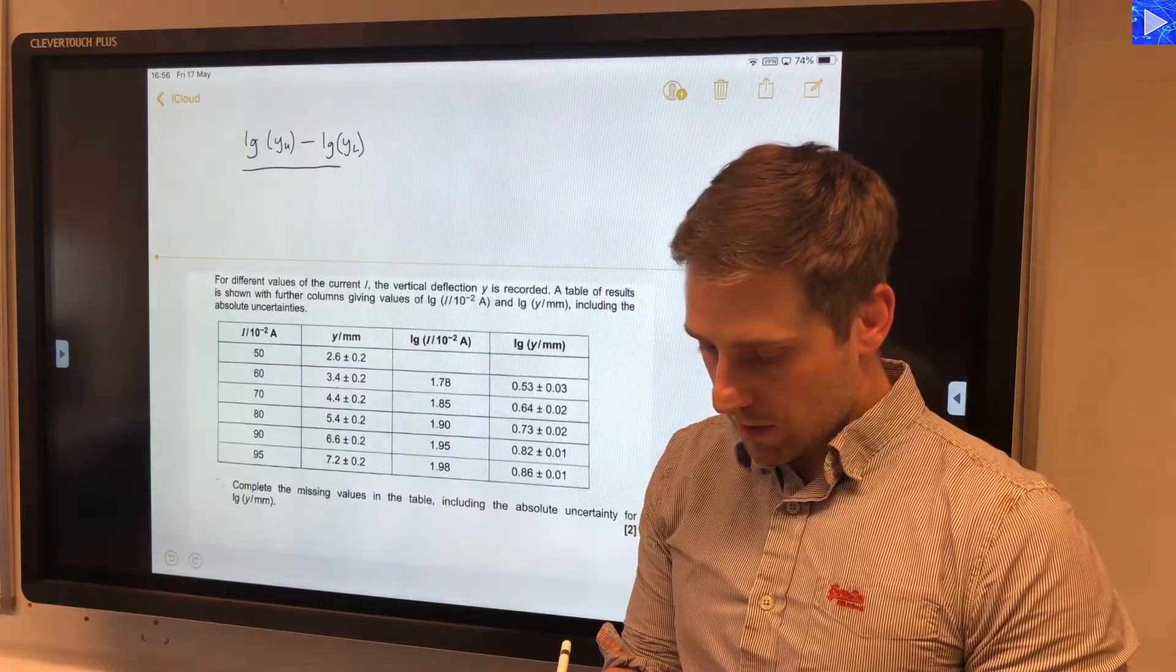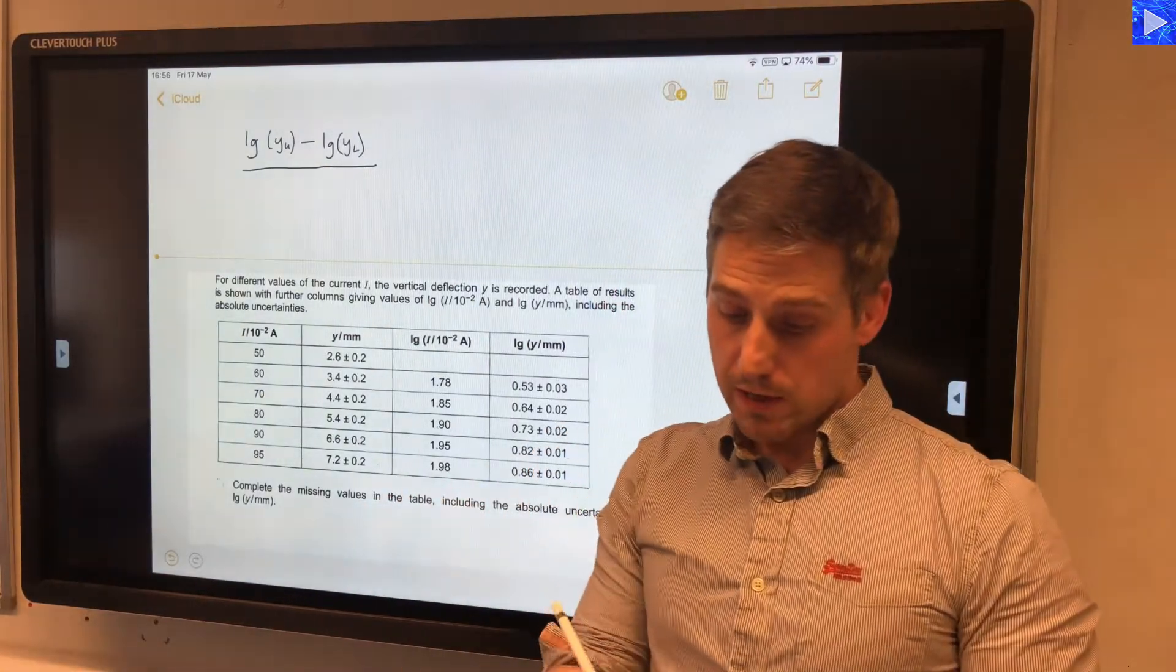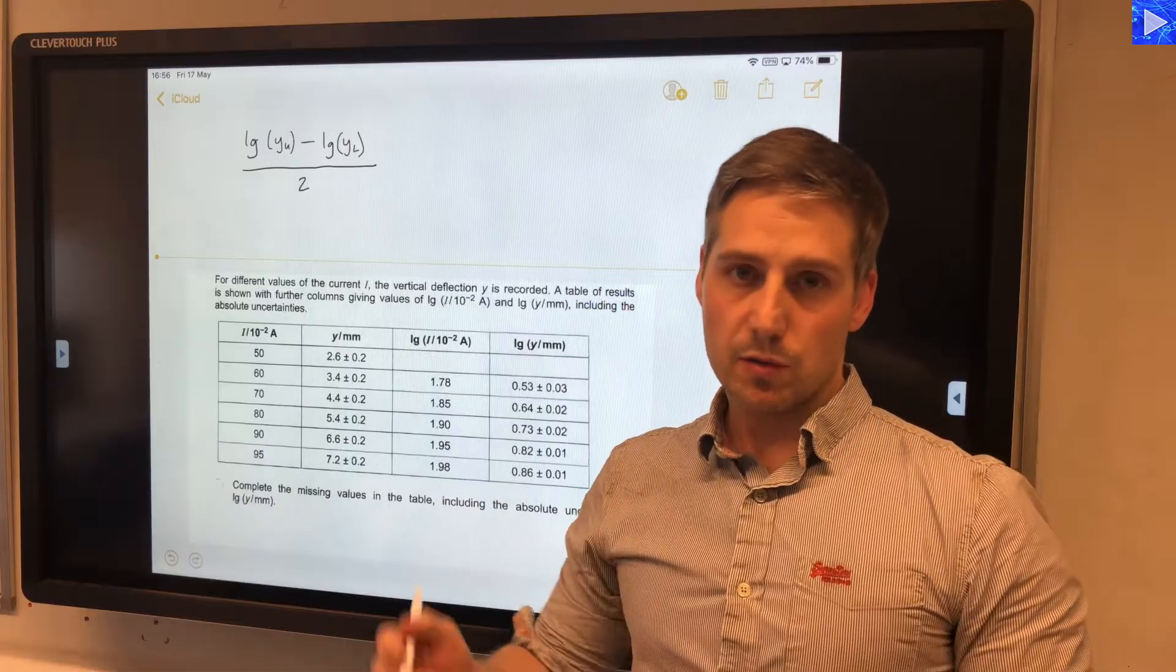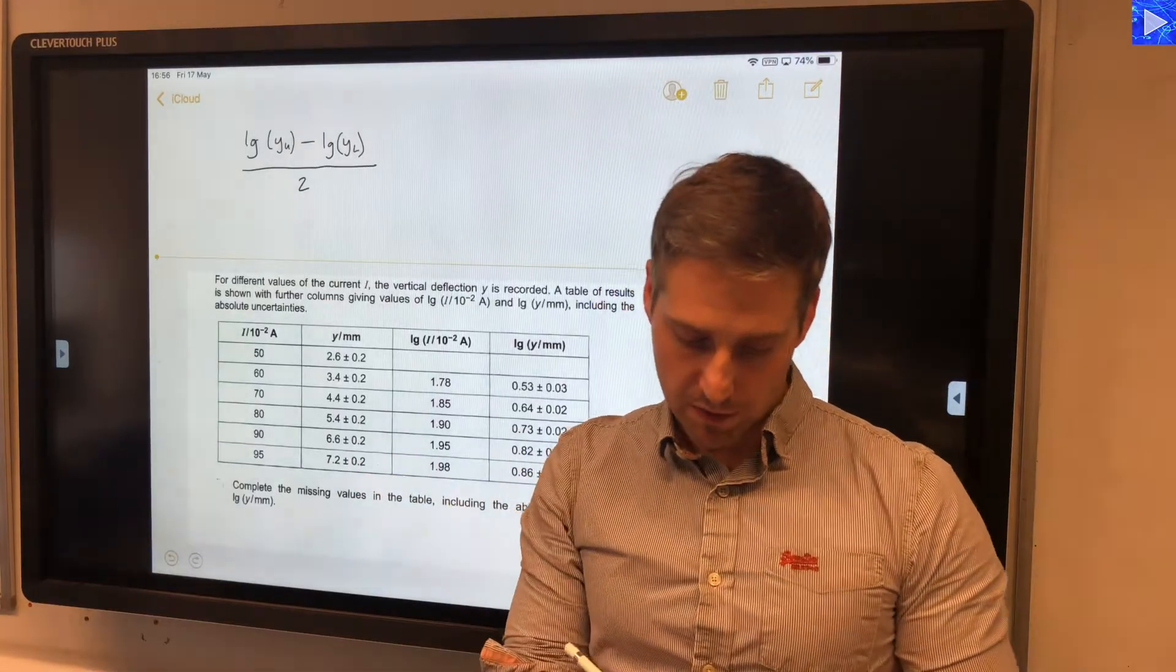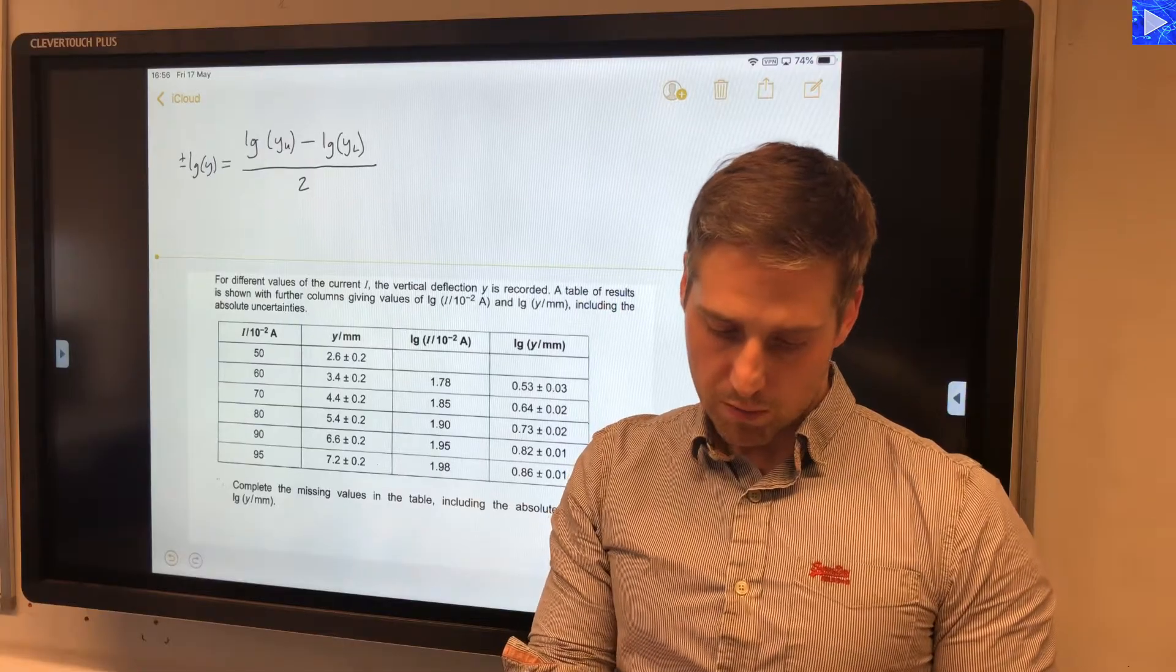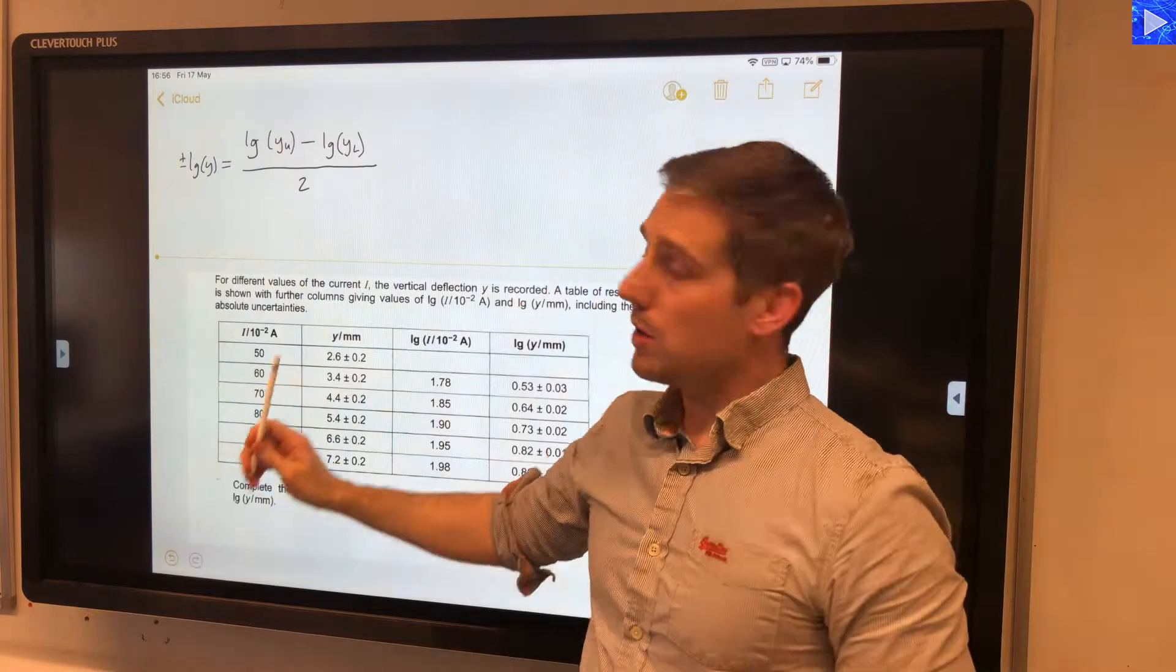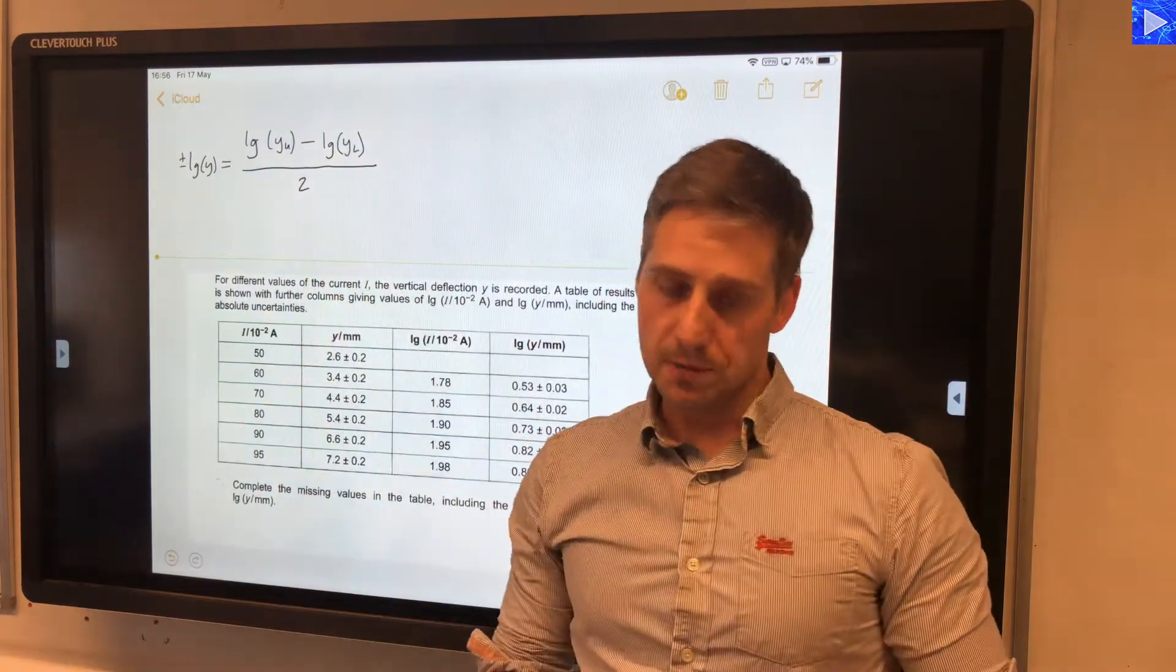So that's the range of uncertainty in the log value, and then we need to divide that by 2 so we can say plus or minus this value. So plus or minus log y would be equal to log of the upper value minus the log of the lower value divided by 2.